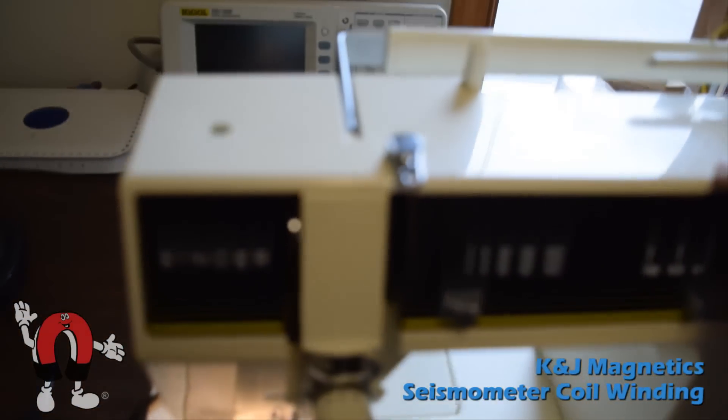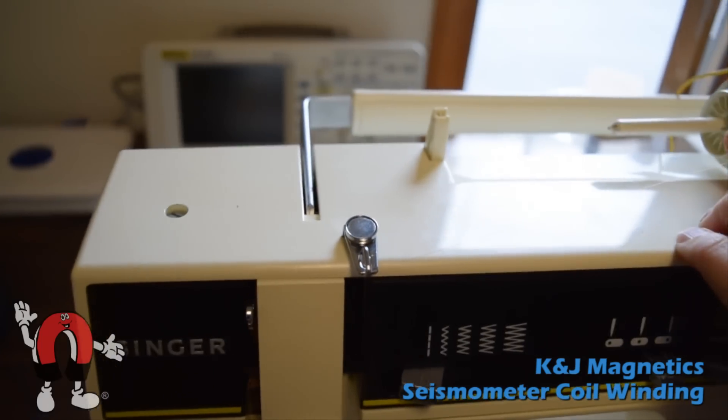Here you can see the spool and the wire runs up into the guide of the sewing machine and onto the spool.